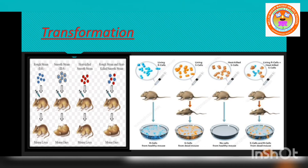The next method is transformation. Transfer of DNA from one bacterium to another is called transformation. In the year 1928, the bacteriologist Frederick Griffith demonstrated transformation in mice using Diplococcus pneumoniae. Two strains of this bacterium are present: one strain produces smooth colonies and is virulent — meaning it causes disease — called the S-type strain. Another strain produces rough colonies and is avirulent, meaning harmless, called the R-type strain.